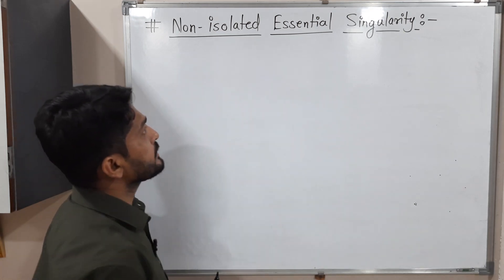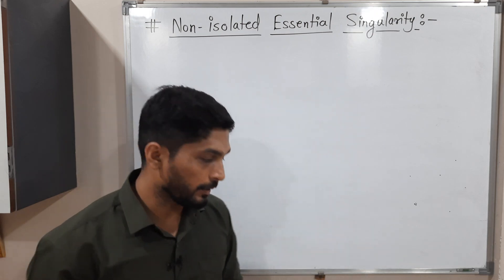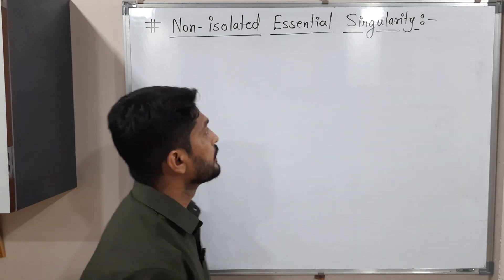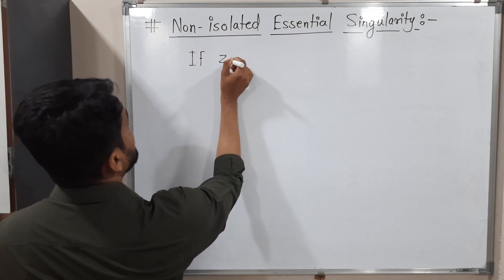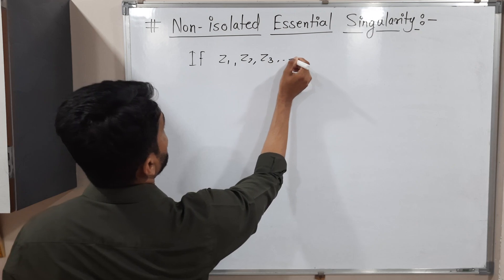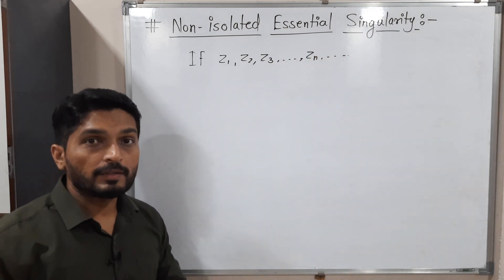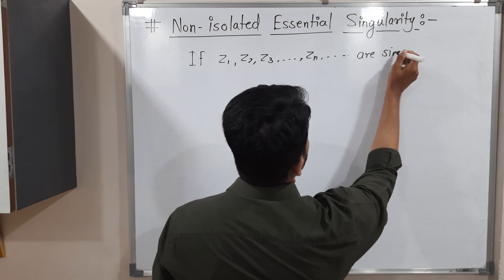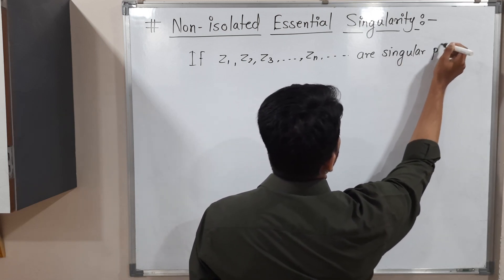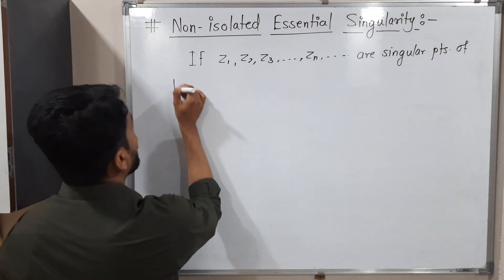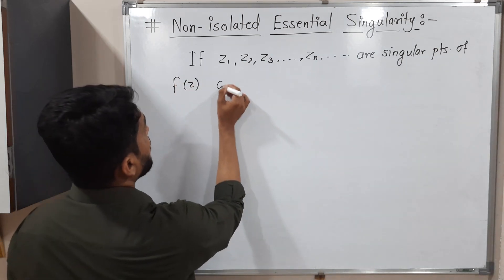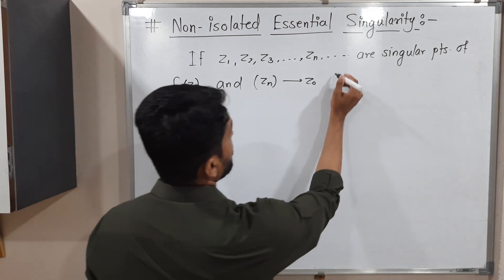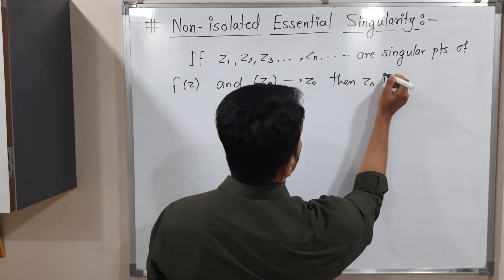Non-isolated essential singularity is one type of non-isolated singularity. Let us discuss its definition. Suppose we have a sequence of singular points: z1, z2, z3, and so on, zn and so on — infinitely many singular points of f(z).